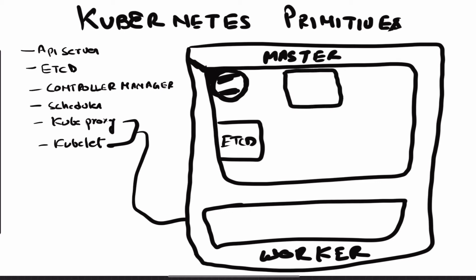Coming to controller manager — there are a few controller managers that take care of basic operational tasks. For example, the node controller manages the onboarding of new nodes: if you add a new node to the cluster, that is managed by the node controller. Similarly, the replication controller ensures that you have the specified number of containers running in your application. That's what the controller manager does.